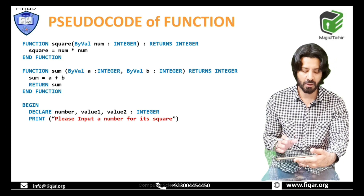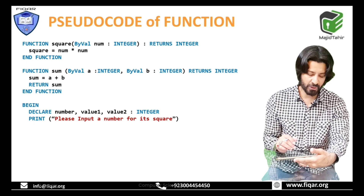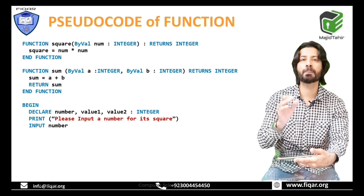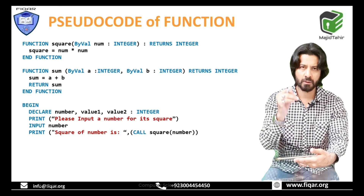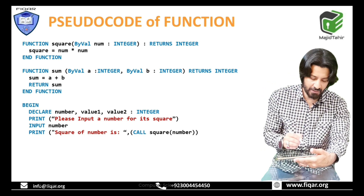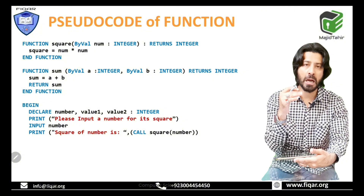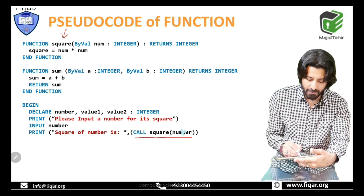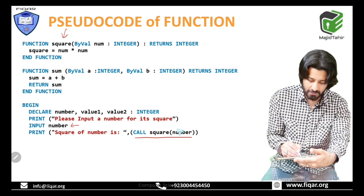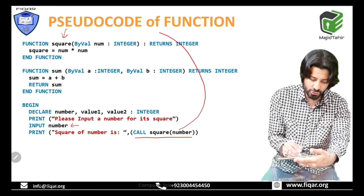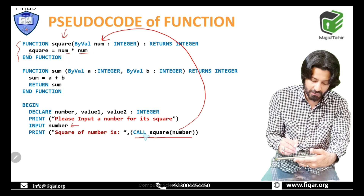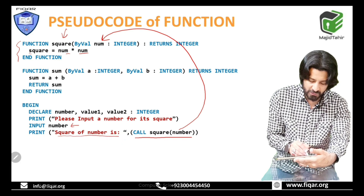The main program begins by declaring variables: number, value1, value2 as integer. It prints a prompt — 'please input a number for its square' — and the user enters a value into number. Then the output displays 'square of the number is' and a call to the function 'square' is made, passing 'number' as the parameter. The function computes number times number, and the result is displayed.